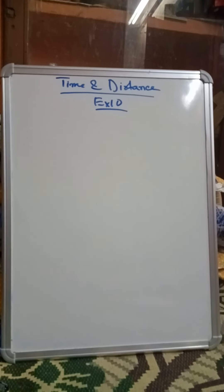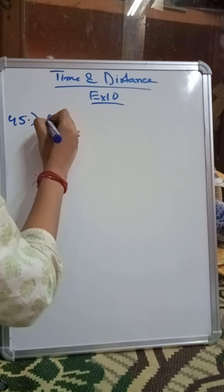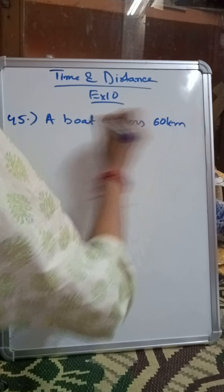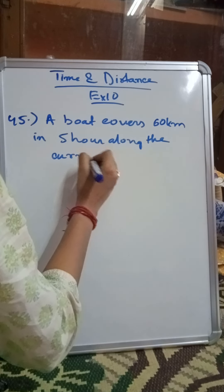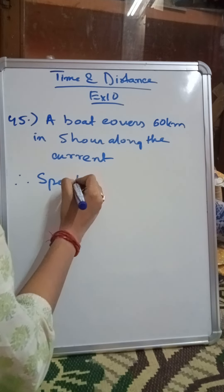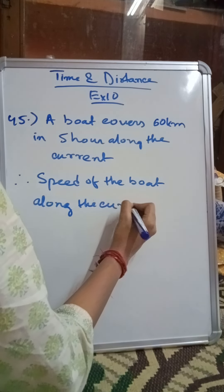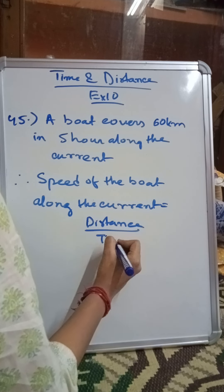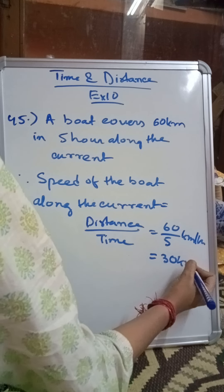So first of all, we are given the data that a boat covers 60 km in 5 hours along the current. Therefore, the speed of the boat along the current is distance divided by time, which is 60 by 5 km per hour.